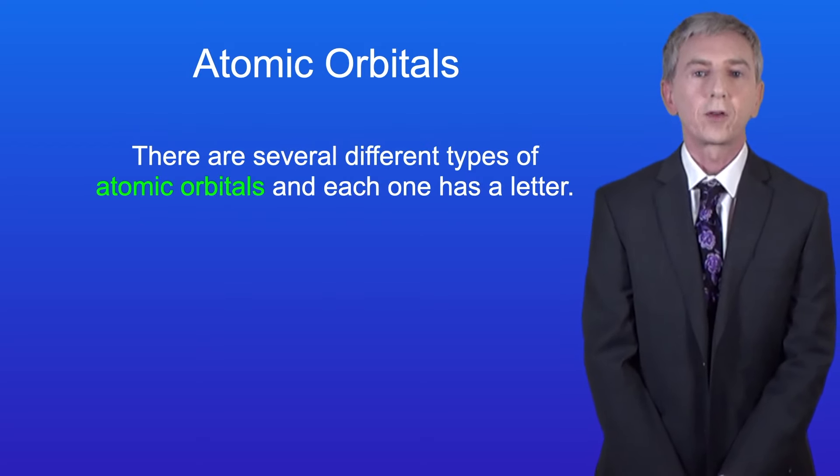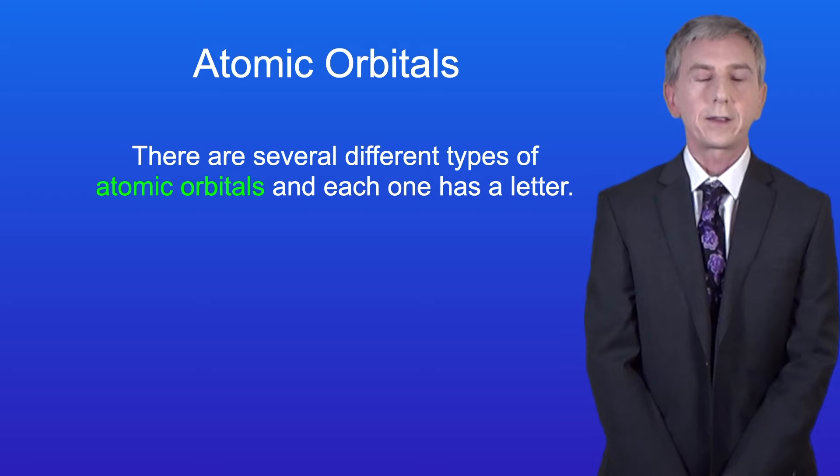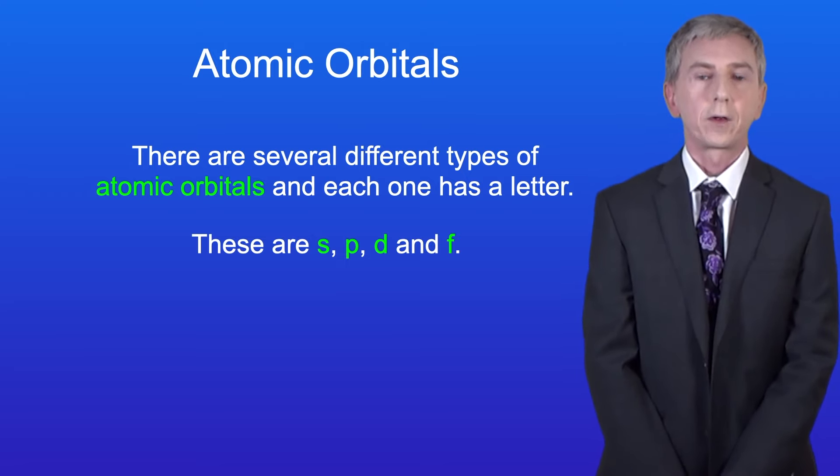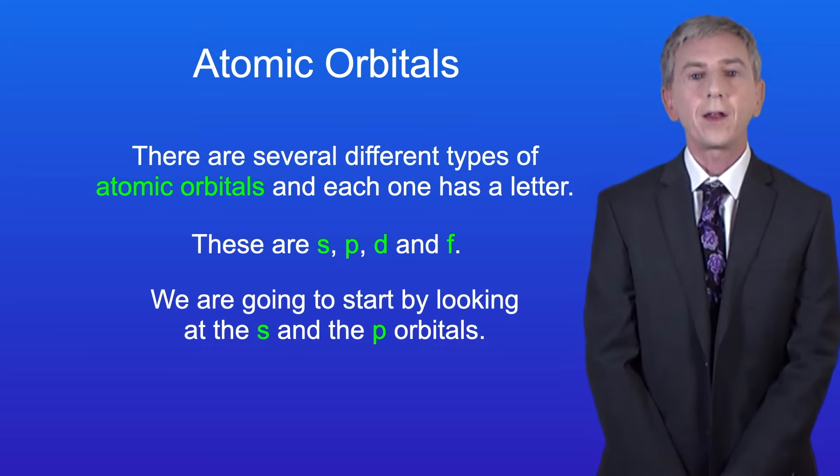There are several different types of atomic orbitals, and each one has a letter. These are S, P, D, and F. We're going to start by looking at the S and the P orbitals.